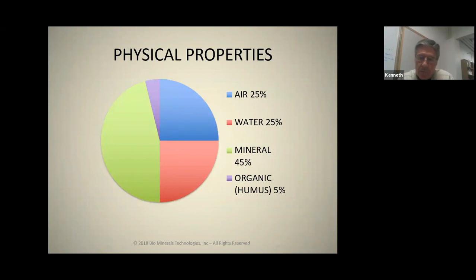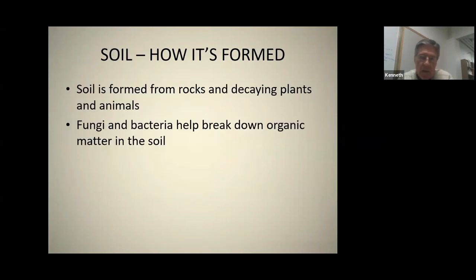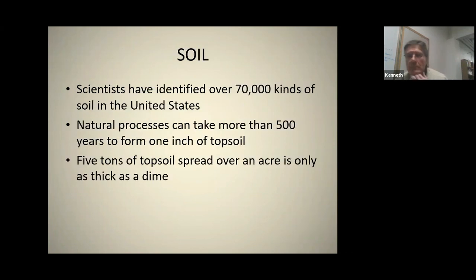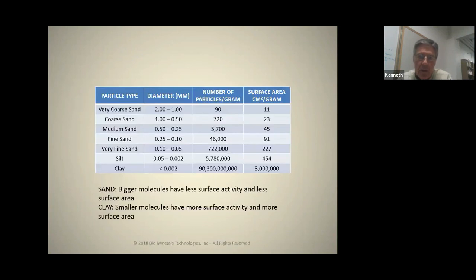The physical properties of soil: 25% air, 25% water, mineral content, and ideally 4% to 5% humus. Soil is formed from decaying rocks, and plants, animals, bacteria, and fungi break things down and build things back up. We have 70,000 different types of soil in the U.S. alone — it takes more than 500 years to produce one inch of topsoil, which is only about a dime's thickness over an acre — five tons of it. When we look at the structure of soil: very coarse sand has about 90 particles per gram; fine sand is up around 45,000 to 46,000. When we get into silts and clays, which we can't see, we're at approximately 6 million to 90 billion particles per gram.